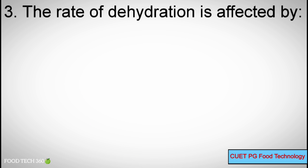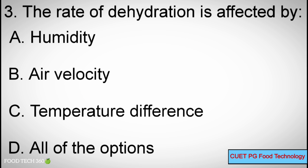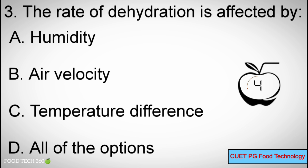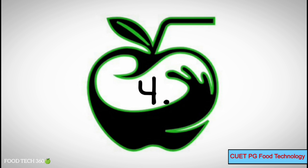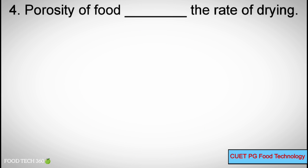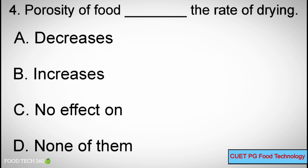Q3: The rate of dehydration is affected by — A. Humidity, B. Air velocity, C. Temperature difference, D. All of the options. Correct answer: D. All of the options.